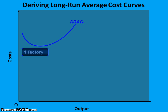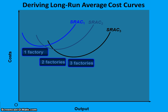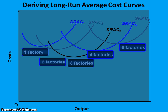For example, if a company was operating in the short run with one factory open, this would be their short-run average total cost curve. If the company expanded and added a second factory, this would be another possible short-run average total cost scenario. With a third factory, a fourth, and a fifth, we have different short-run average total cost curves. Only one applies at any given time depending on how many factories the firm chooses to operate.